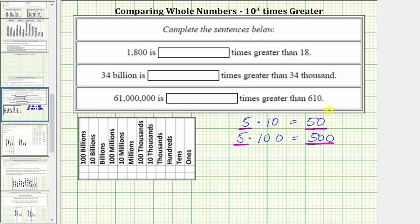Comparing the digits of five and 500, notice how both contain the digit five, but 500 has two zeros to the right of the five, making it 100 times greater than five.